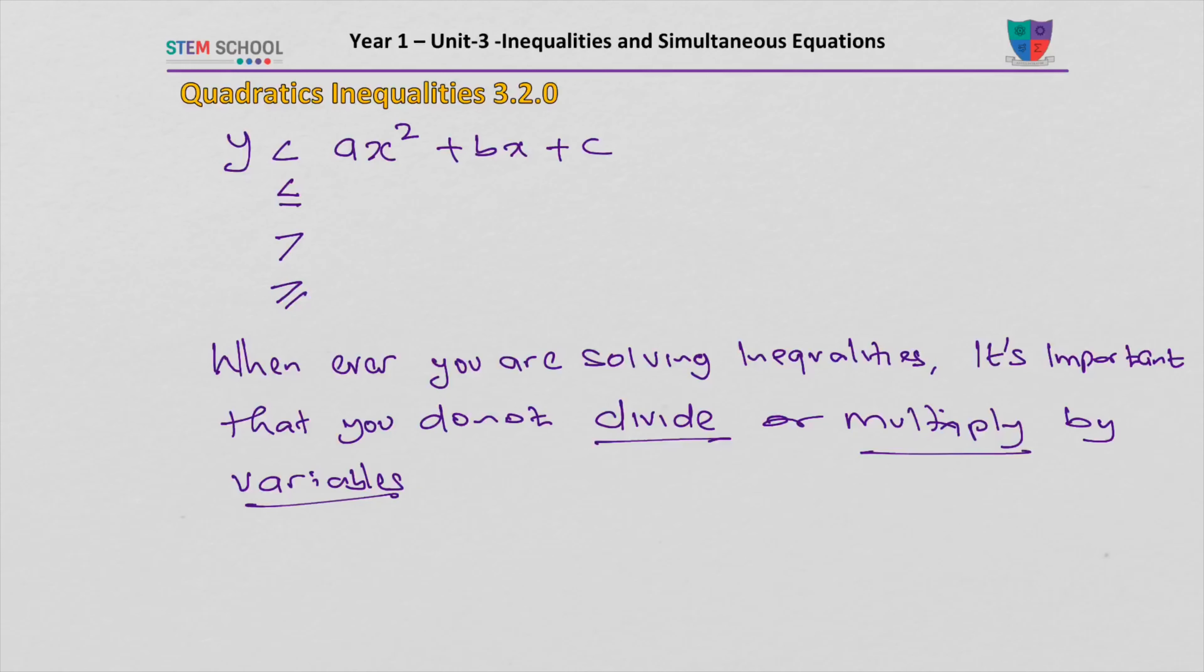Because the variable might be negative which means the sign will change, the variable might be zero and you cannot divide by zero.